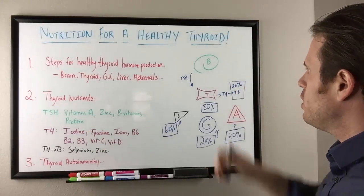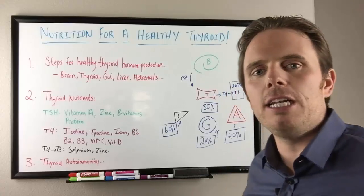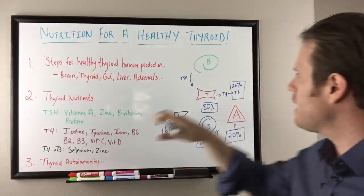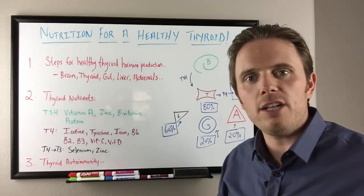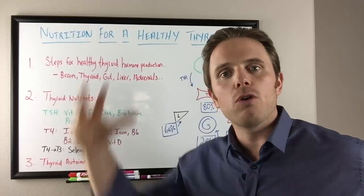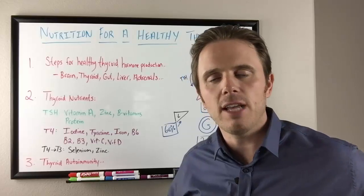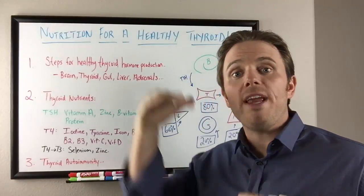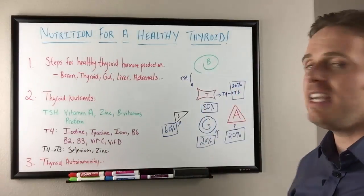First off, we have TSH. The brain needs vitamin A, zinc, B vitamins, protein, asparagine, various amino acids to make our TSH. That's the signaler. TSH is an inverse hormone. It goes high when thyroid hormone is low and it goes low when thyroid hormone is high. If I'm yelling at someone and I'm not getting their attention, I'll have to raise my voice louder till I get their attention. Think of that as what TSH is doing.